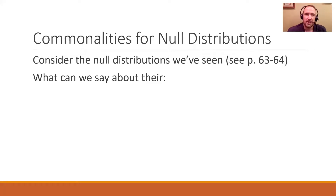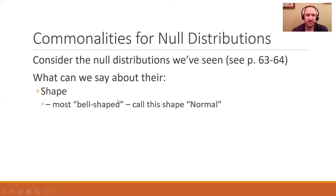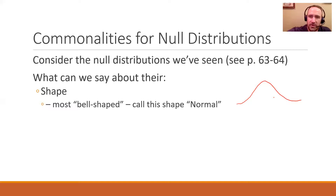A theory-based approach is all based on the idea that there are some commonalities in null distributions. If you think about the null distributions that we've seen so far, you can take a look in the textbook pages 63 and 64 — they have many of them pictured there. When you take a look at the null distributions we've looked at, we can say some common things about their shape. Most have turned out to have this bell shape. In statistics, it's a shape that we call normal. Some have been more smooth and some have been more jagged, but they have the large hump in the middle kind of tapering off on either end.